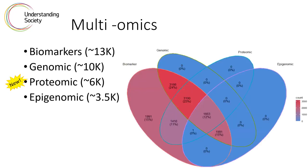Multi-omics. You may have been wondering what the overlap is between the Understanding Society biological datasets. In terms of number of participants, the two biggest datasets are the biomarkers and the genomics. Data availability varies a little bit by biomarker, but there's normally 12,000 to 13,000 people for each one. The overlap for all four datasets is over 1,600 people.